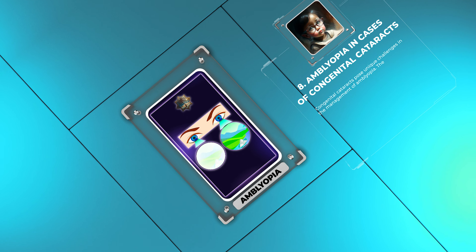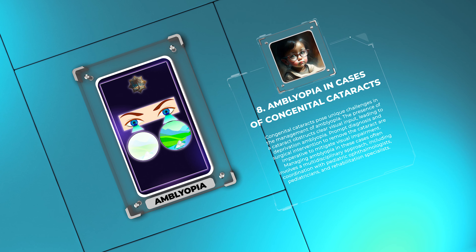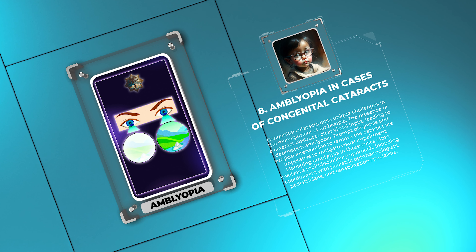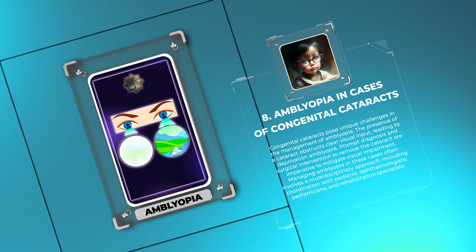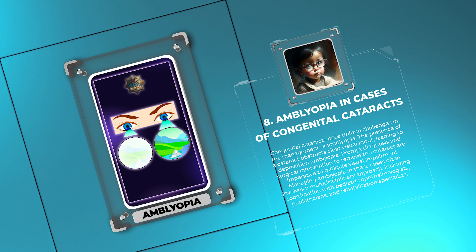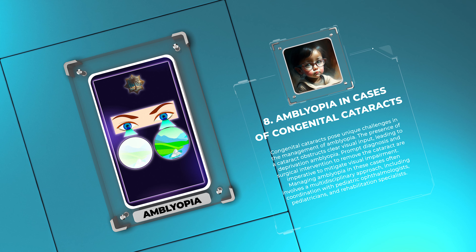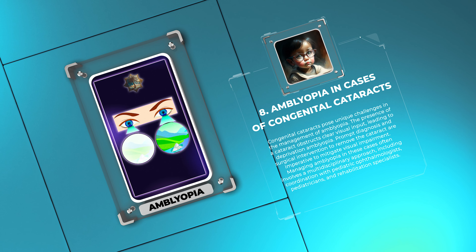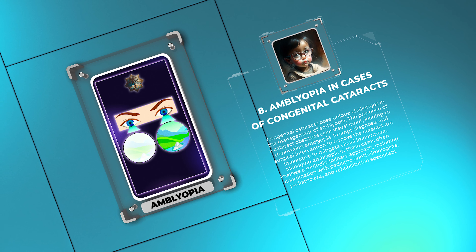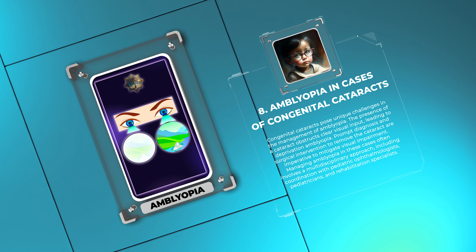Congenital cataracts pose unique challenges in the management of amblyopia. The presence of a cataract obstructs clear visual input, leading to deprivation amblyopia. Prompt diagnosis and surgical intervention to remove the cataract are imperative to mitigate visual impairment. Managing amblyopia in these cases often involves a multidisciplinary approach, including coordination with pediatric ophthalmologists, pediatricians, and rehabilitation specialists.